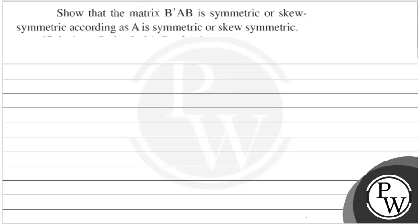Let's see the question. The question says: show that the matrix B'AB is symmetric or skew-symmetric according as A is symmetric or skew-symmetric. So, if A is symmetric, then B'AB is symmetric. And if A is skew-symmetric, then B'AB is skew-symmetric.